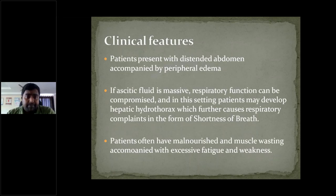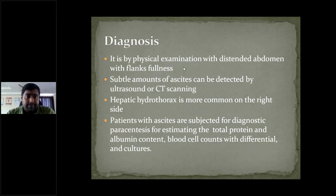Clinically, patients with ascites have a distended abdomen which is easily diagnosed on examination. They present with distended abdomen, flank fullness, and accompanying peripheral edema. If the ascitic fluid is massive, respiratory function can be compromised due to compression of the diaphragm causing decreased lung expansion and shortness of breath. Patients are also malnourished with muscle wasting, fatigue, and weakness. Subtle amounts of ascites are detected by ultrasound or CT scanning.